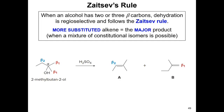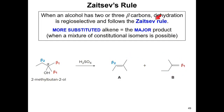Dehydration elimination reactions are regioselective and follow Zaitsev's rule when an alcohol contains more than two beta-carbon atoms — the more substituted alkene is the major product. For example, a molecule with two types of beta-carbons will generate two different alkenes: a trisubstituted one and a disubstituted one. According to Zaitsev's rule, the trisubstituted alkene is the major product.